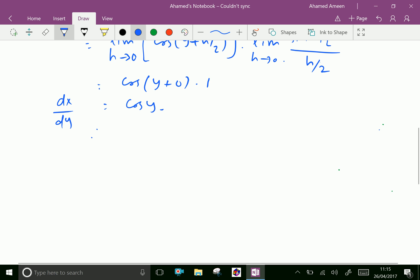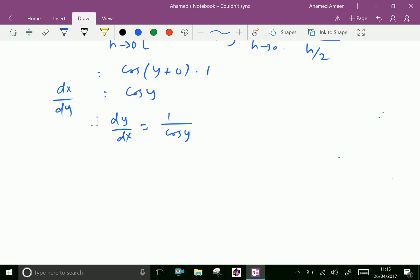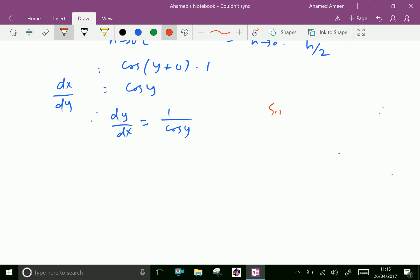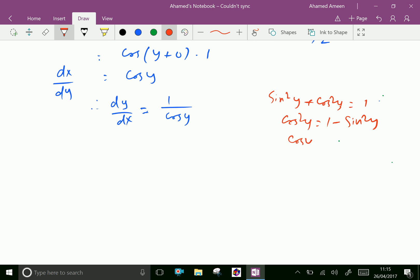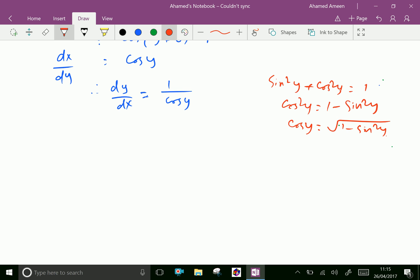Therefore dy by dx is reciprocal of cos y, which is 1 over cos y. We know sine squared y plus cos squared y equals 1, then cos squared y equals 1 minus sine squared y, and cos y equals square root of 1 minus sine squared y. Now apply this: dy by dx equals 1 over square root of 1 minus sine squared y.